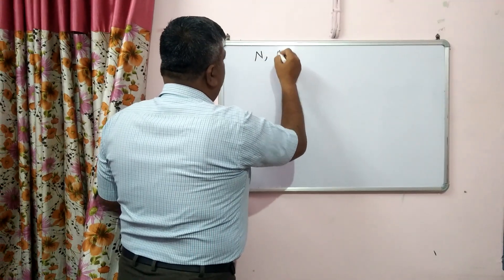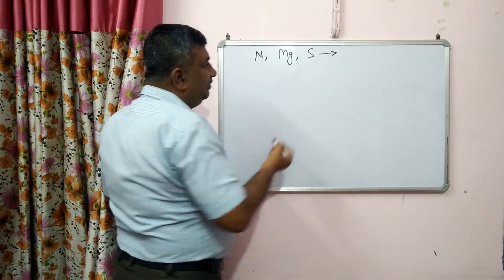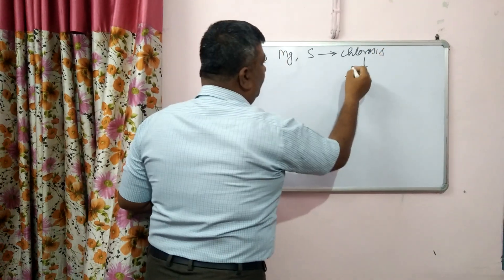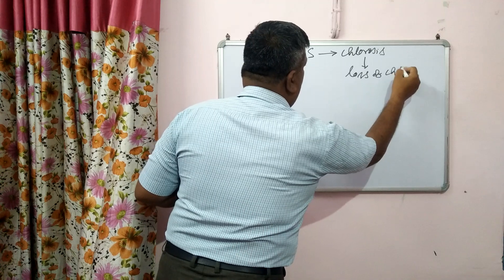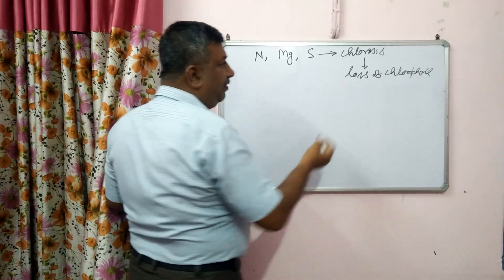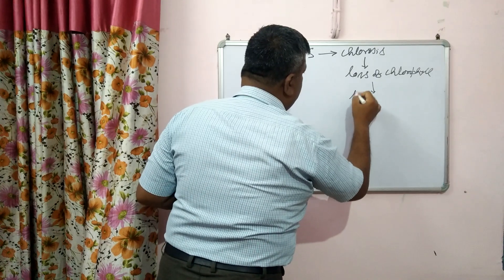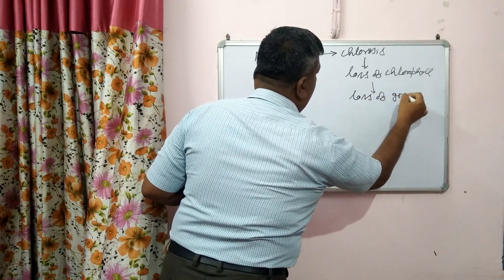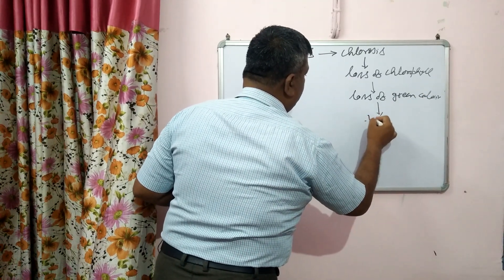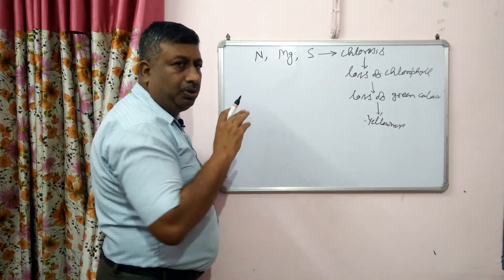Nitrogen, magnesium and sulfur — all three nutrient deficiencies cause chlorosis, which means loss of chlorophyll. Loss of chlorophyll means loss of green color, and then leaves become yellow. So yellowing develops in all three cases, and this is the commonality among nitrogen, magnesium and sulfur deficiencies.